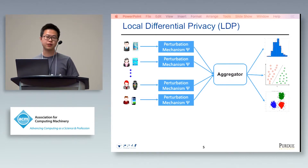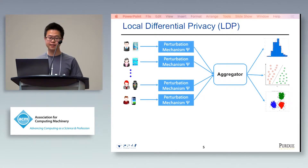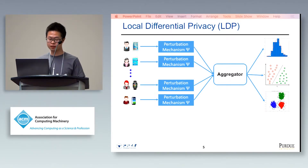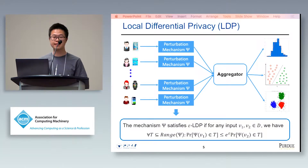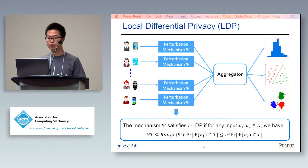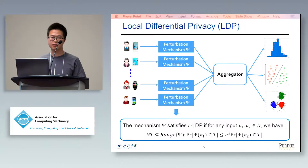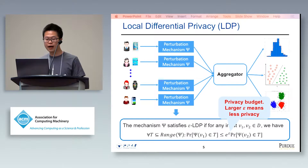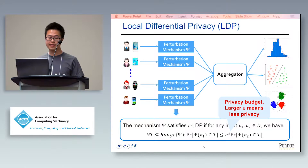Specifically, each user can perturb their private data using a mechanism Psi, and the aggregator can use the perturbed data to extract some useful information. We call a mechanism Psi satisfying epsilon-LDP if for any input V1, V2 in domain D, their probabilities of outputting the same result is bounded by a parameter epsilon. We call epsilon the privacy budget. Normally, a larger epsilon means less privacy.